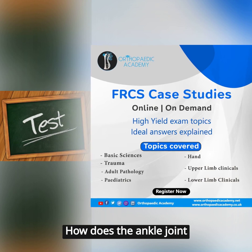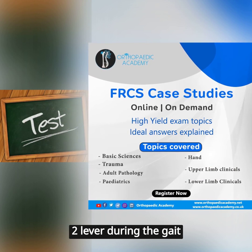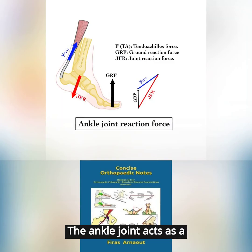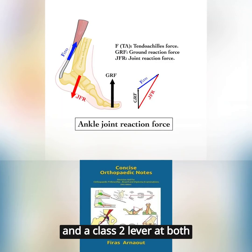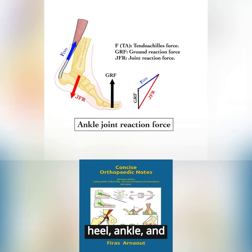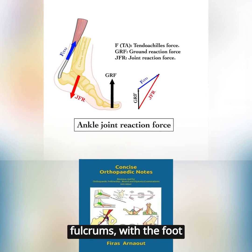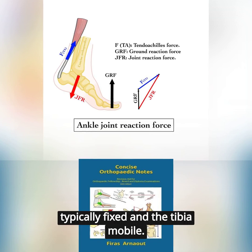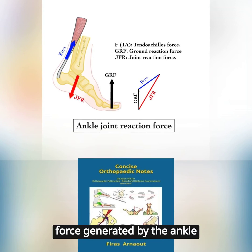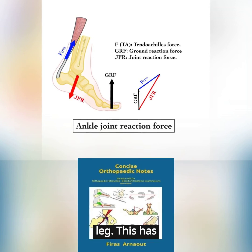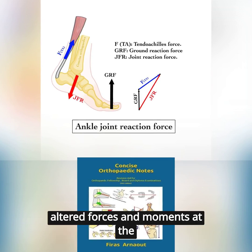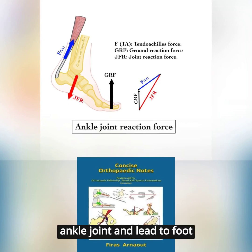How does the ankle joint act as a class 1 and class 2 lever during the gait cycle and what are the implications of this? The ankle joint acts as a class 1 lever at mid-stance and a class 2 lever at both heel strike and toe off. During the gait cycle, the heel, ankle, and first MTPJ all serve as fulcrums, with the foot typically fixed and the tibia mobile. The ground reaction force is equal and opposite to the force generated by the ankle joint, which is transmitted up the leg. This has implications for conditions such as ankle equinus, which can cause altered forces and moments of the ankle joint and lead to foot deformities.